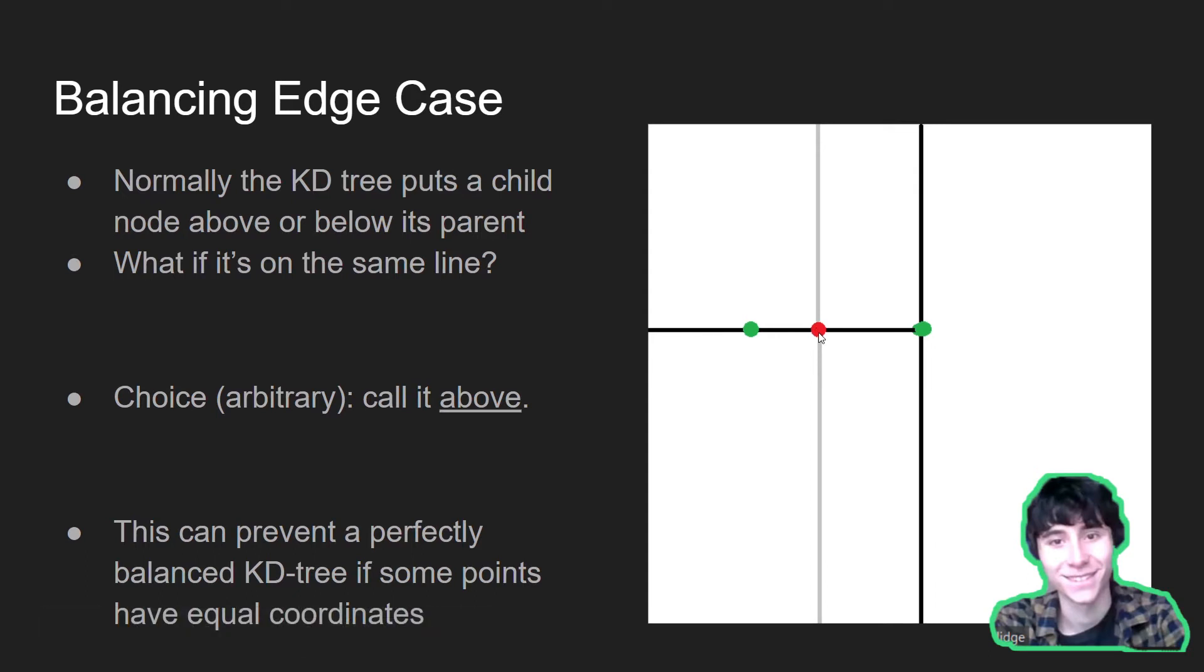An arbitrary choice has to be made in order to make sure that the get and other recursive algorithms are capable of knowing which subtree this child is in. In this case, we'll make the arbitrary choice to call it above, so we'll move into this subtree here, and this is what we also chose to do in the code. Because a convention has to be chosen here, this can prevent a perfectly balanced KD-tree if some points have equal coordinates. However, it will still be optimal, and in general it will be very close to balanced.